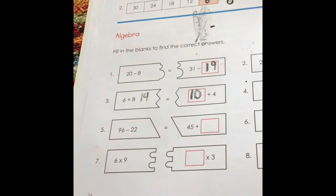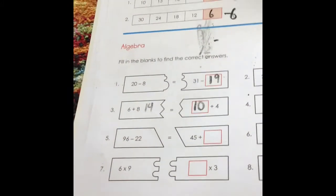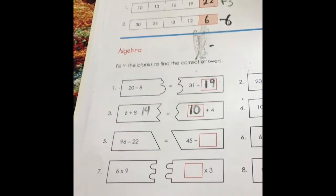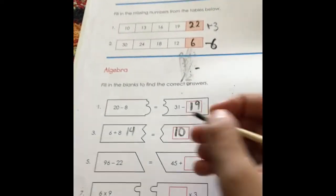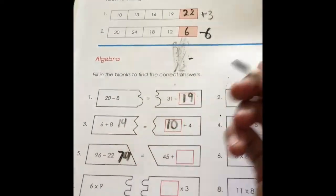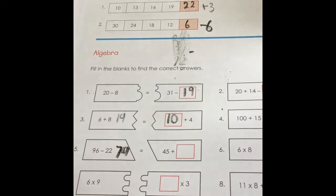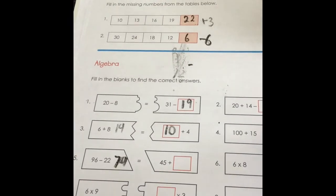96 take away 22 equals 80... 76. And 76 take away 2 equals 74. So 74 is the answer over here. 45 plus something equals 74. 45, 55...